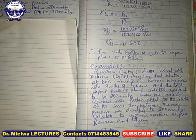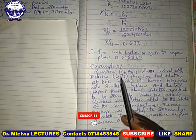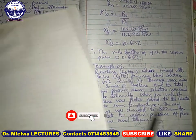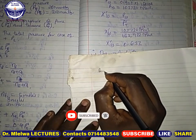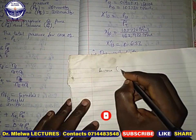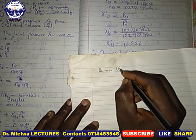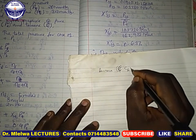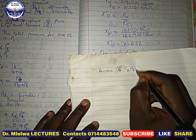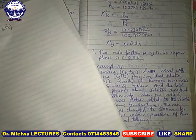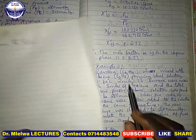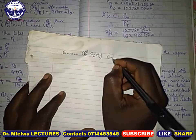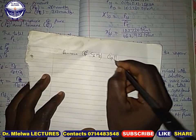Now in today's session we have this question. Benzene, which is C6H6, when mixed with toluene — toluene is C7H8 — they form an ideal solution.